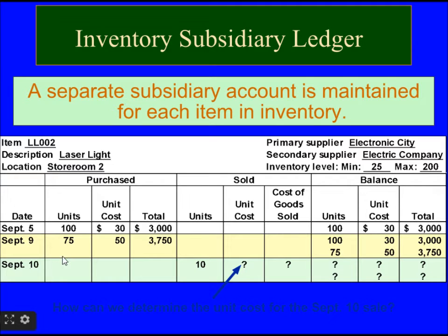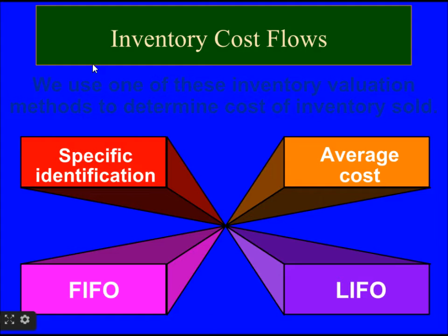So how do we decide when we sell inventory? On September 10, 10 units were sold — should the company use the $30 cost or the $50 cost for the cost of goods sold? There are four methods a company can choose from: specific identification, average cost, FIFO, and LIFO.